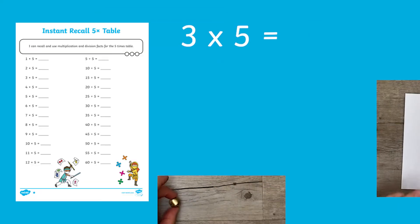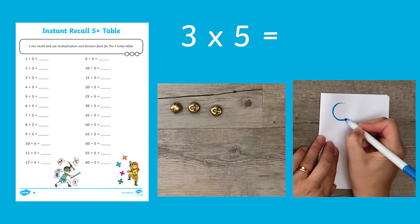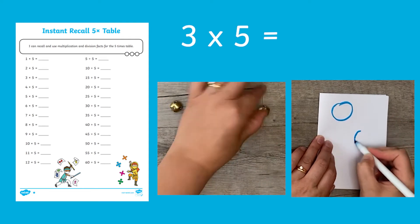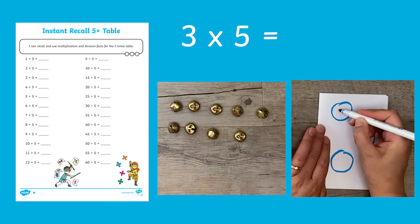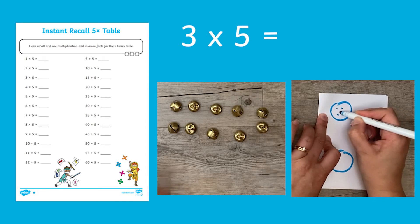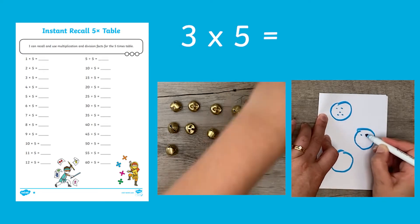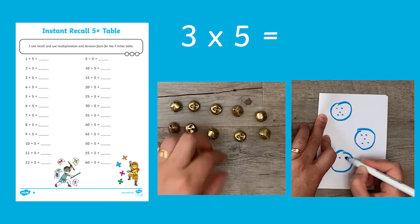When children are first learning their times tables, they can be encouraged to use objects or pictures to help them solve the number sentences. This would be especially useful for children working at the one star level.